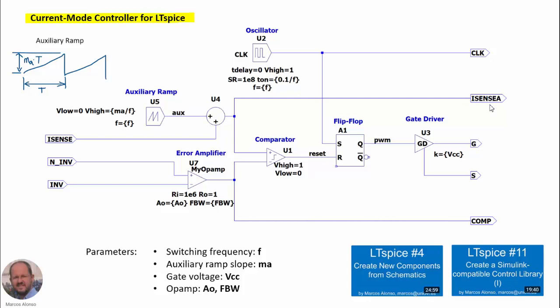For additional information, we are generating the clock as an output, and also an output corresponding to the addition of the auxiliary ramp and the current sensing input. Then we have another output for the gate of the switch, the source of the switch, and finally the output corresponding to the operational amplifier.